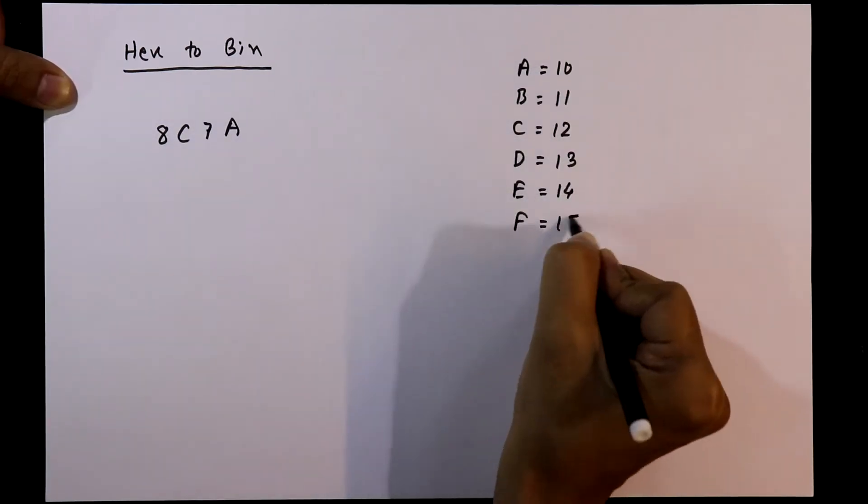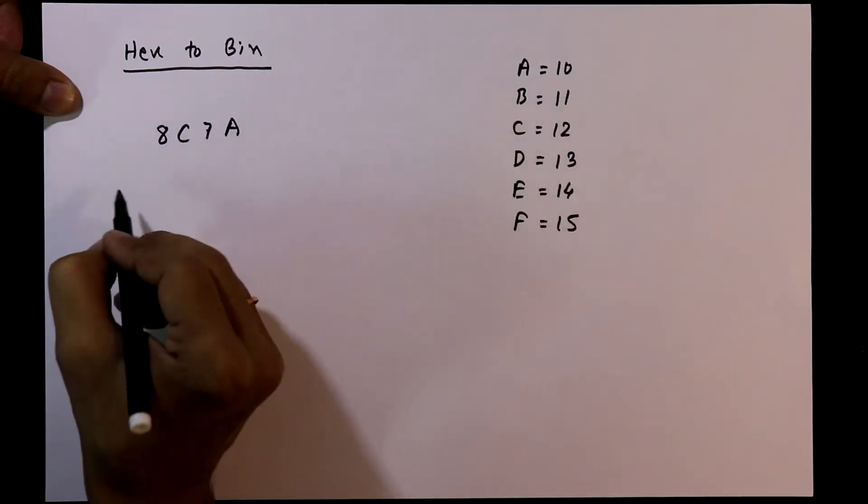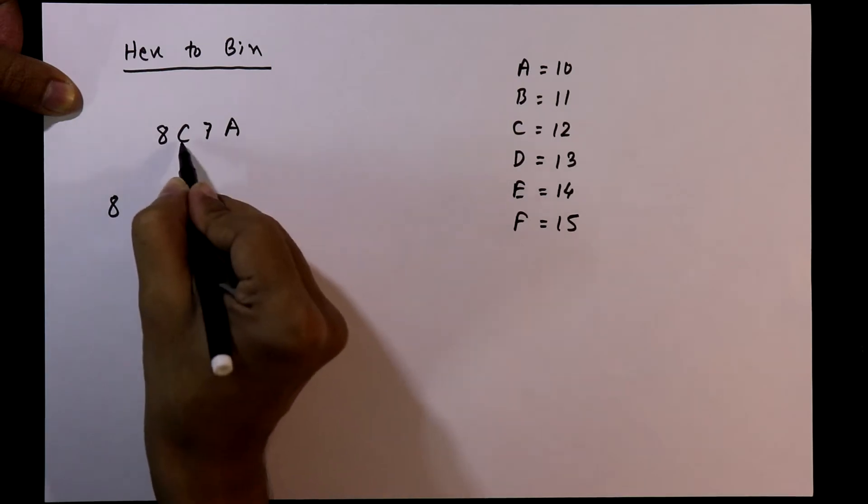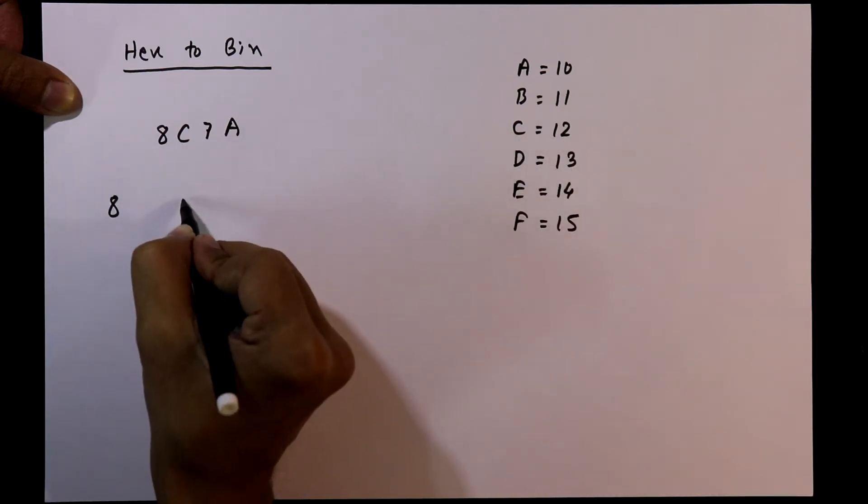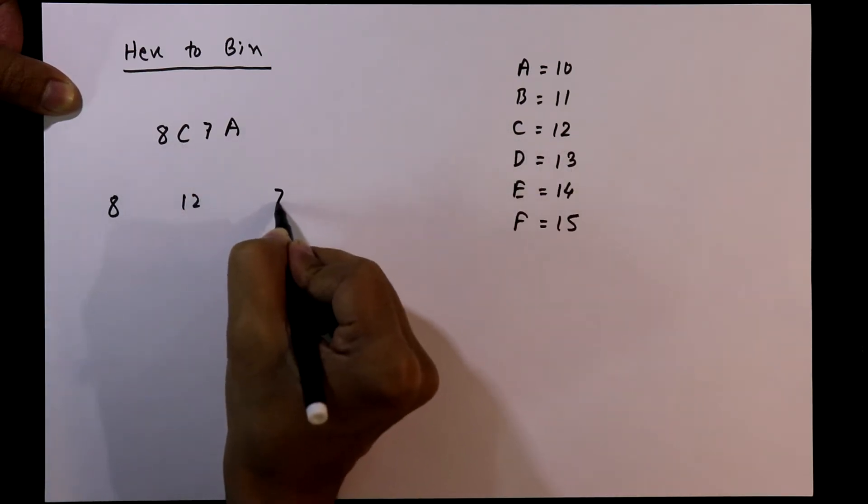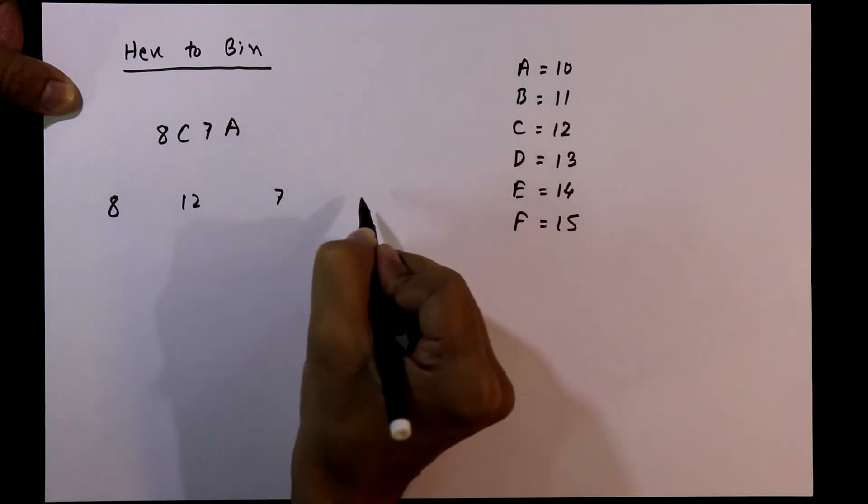We will write this number like this. C means 12, 7, and A means 10.